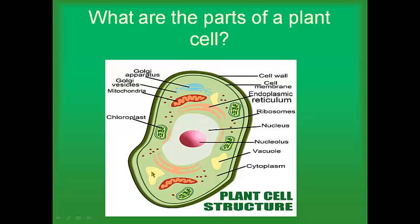Vacuoles are important and so large in a plant cell because plants need a lot of water, and also because they help give the plant cell structure so the plant can grow straight and stay upright. You also have the cytoplasm, which is the gooey gel that all the organelles kind of float around within. And you have the mitochondria, which is the energy plant for the cell — it creates energy for the cell to carry out its functions.